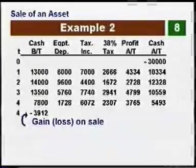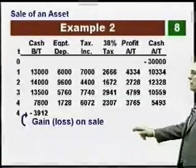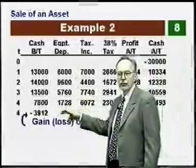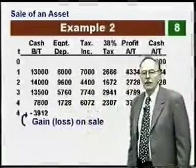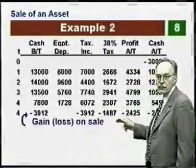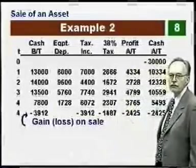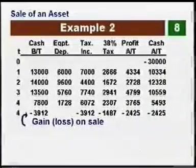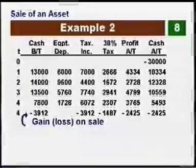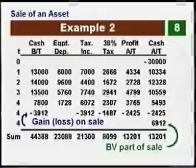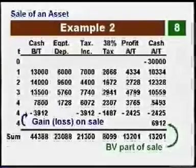Now we have a loss on the sale of the asset — the difference between the $3,000 proceeds and the book value of $6,912. Subtracting the actual proceeds from the book value gives us the loss on the sale. That loss becomes a tax credit. Applying the 38% tax factor to that loss, the resulting minus $1,487 subtracts from our other taxes in year four. So the total tax in year four is $2,307 minus $1,487. The book value portion of the sale is still added back, giving us the total cash flow after tax.